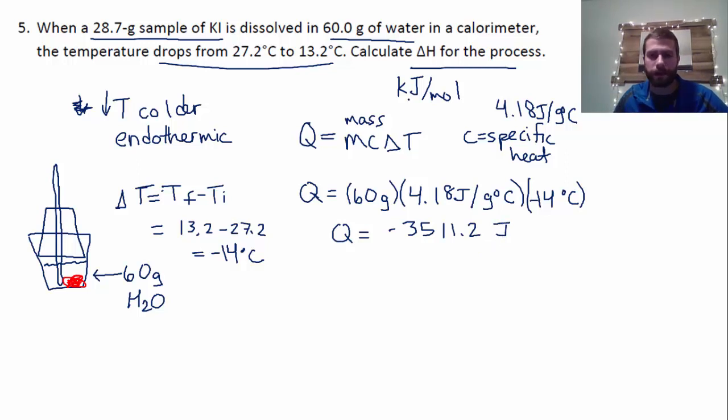Remember, they want us to find kilojoules per mole. So we can easily switch this over to kilojoules. Remember, you can move the decimal point over three places to the left, or you can divide by 1,000. It's up to you. But here we end up with negative 3.5112 kilojoules. So that's for starters. That's Q.